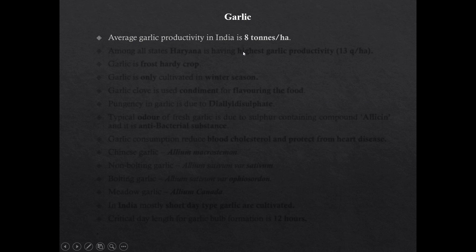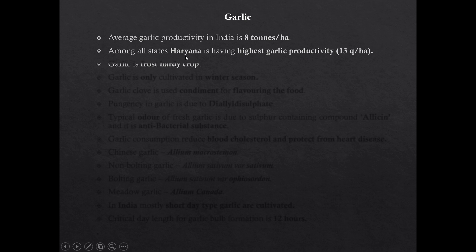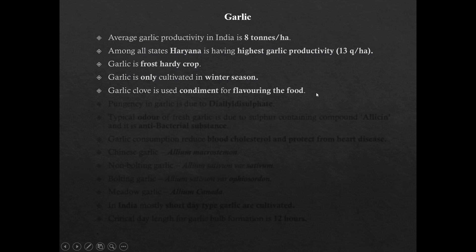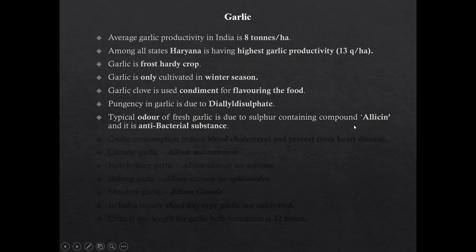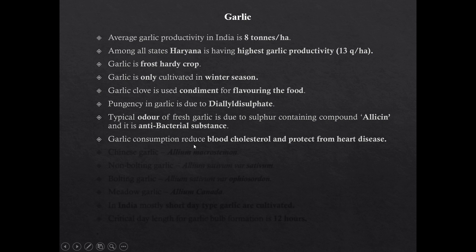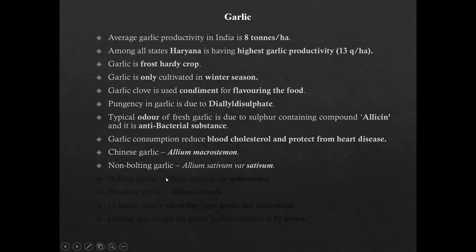Average productivity of garlic in India is 8 tons per hectare. Among all states, Haryana has the highest productivity of garlic. Garlic is a frost-hardy crop and cultivated only in one season — winter. Garlic cloves are used as a condiment for flavoring food. Pungency of garlic is due to allyl disulfide. Typical odor of fresh garlic is due to the sulfur compound allicin. Allicin has antibacterial properties. Garlic consumption reduces blood cholesterol and prevents heart disease. In Ayurveda, garlic is considered as nectar of life. Chinese garlic has the botanical name Allium macrostemon.